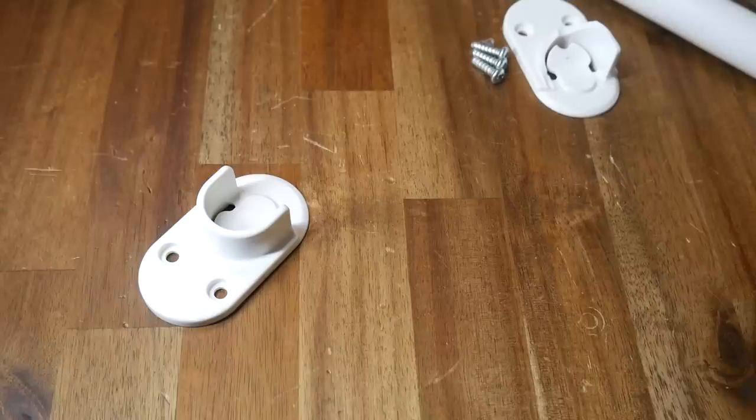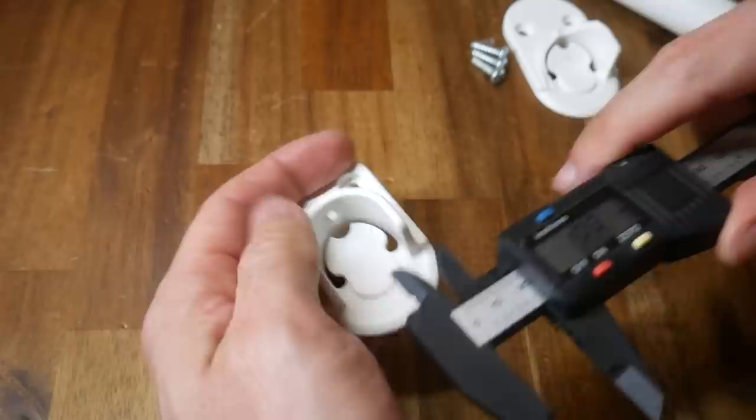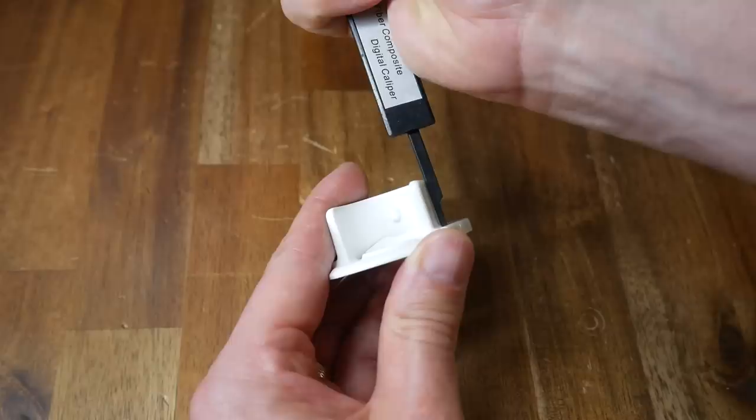Our tool of choice for a job like this is a set of vernier or digital calipers. They're quite affordable and can be used in three different ways. We can measure the exterior dimensions of an object, we can also measure internal distances, and a less common use is using the tail to measure heights.